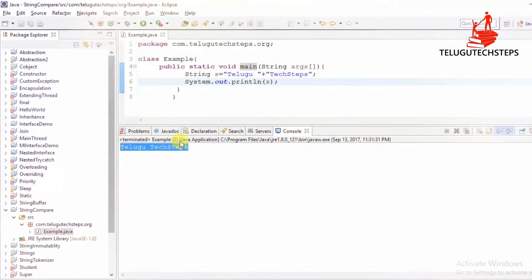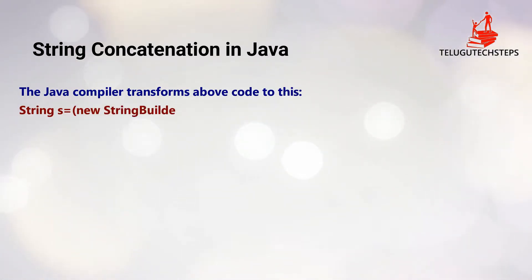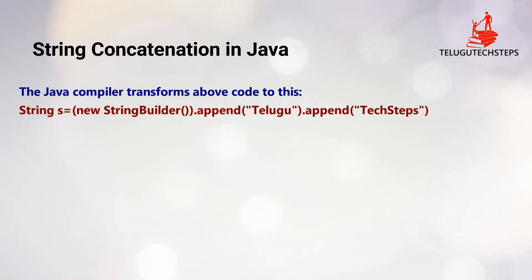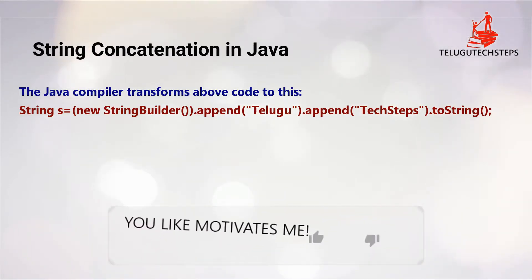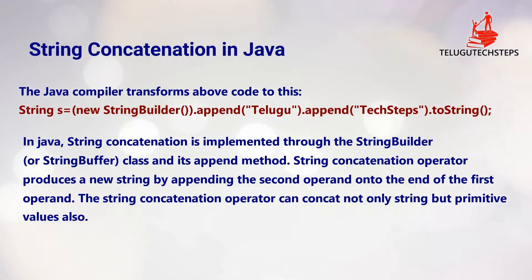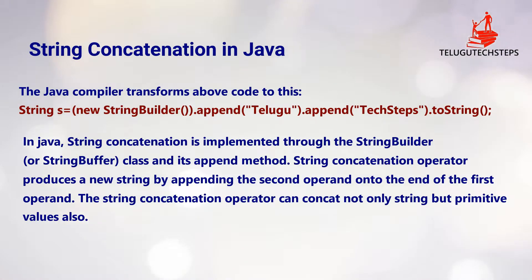The next step involves StringBuffer. StringBuffer append("Telugu"), append("TechSteps"), then toString(). This is one way. In Java, string concatenation is implemented through the StringBuffer class — it appends the method. The string concatenation operator produces a new string by appending the second operand onto the end of the first operand.